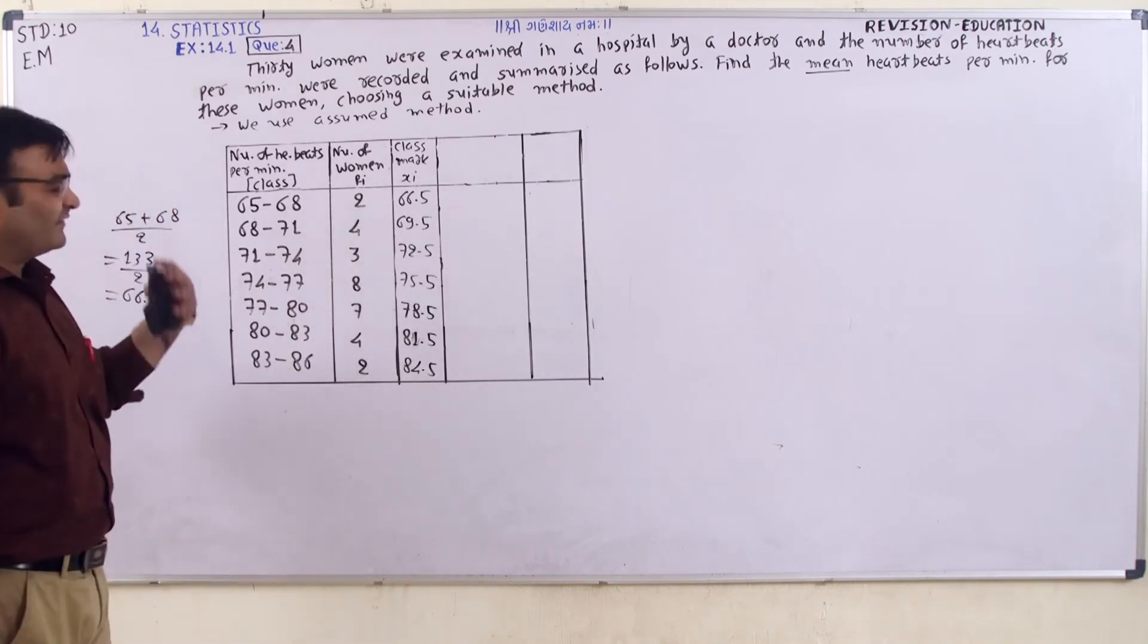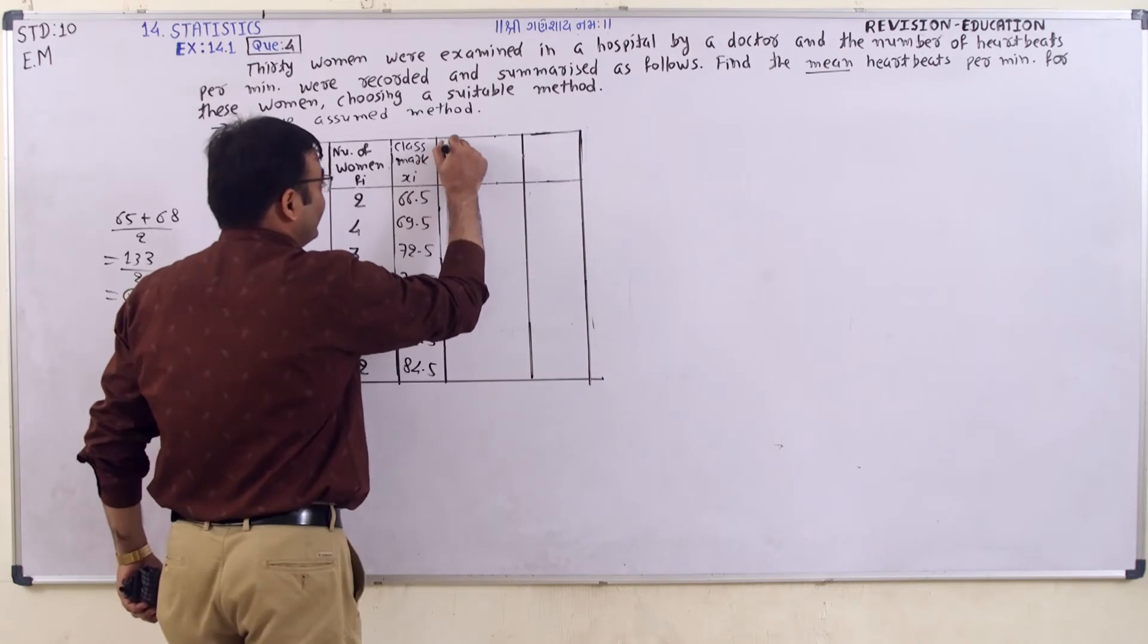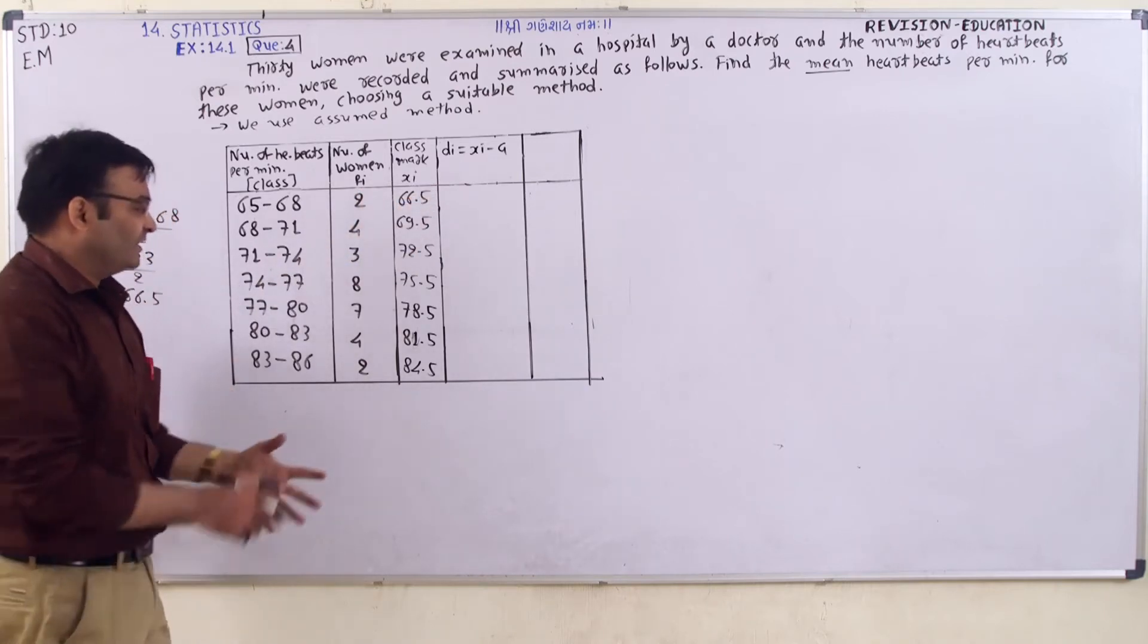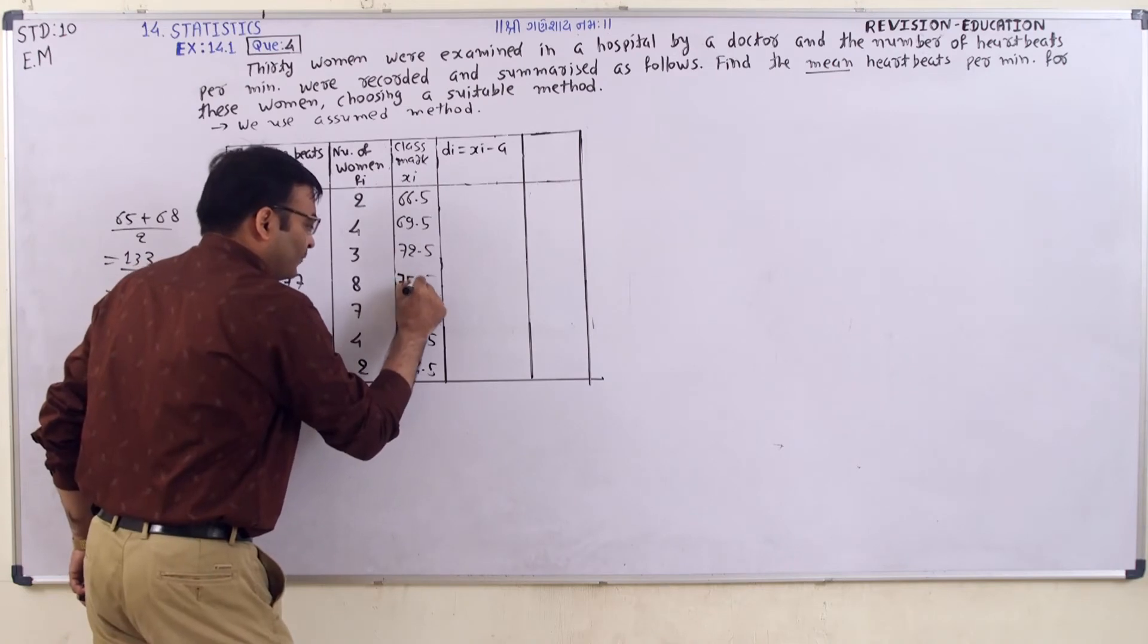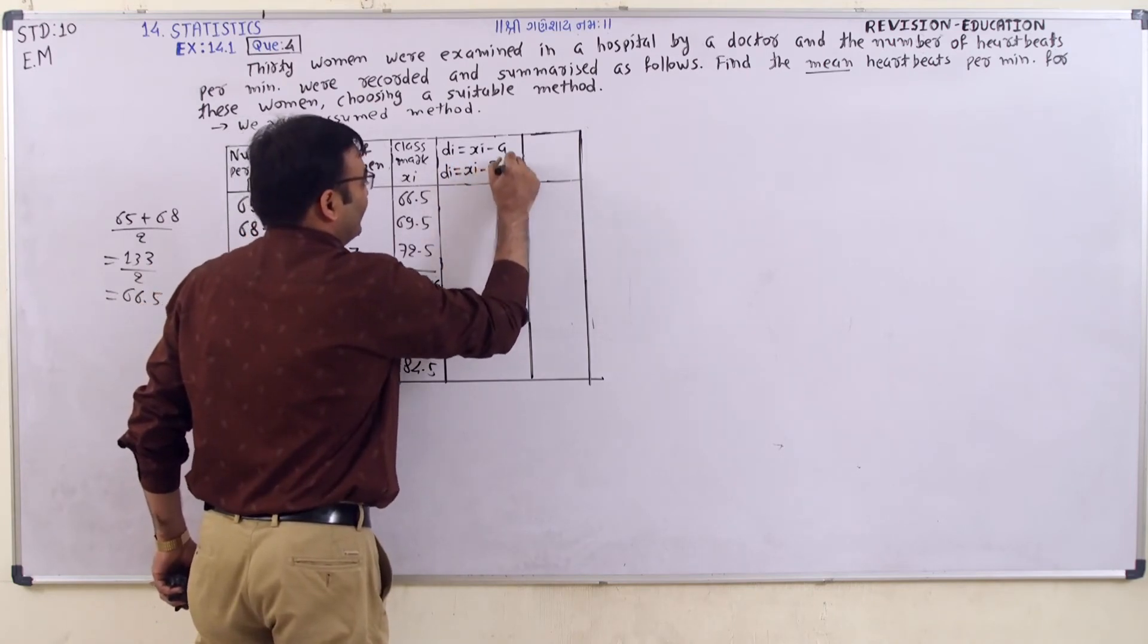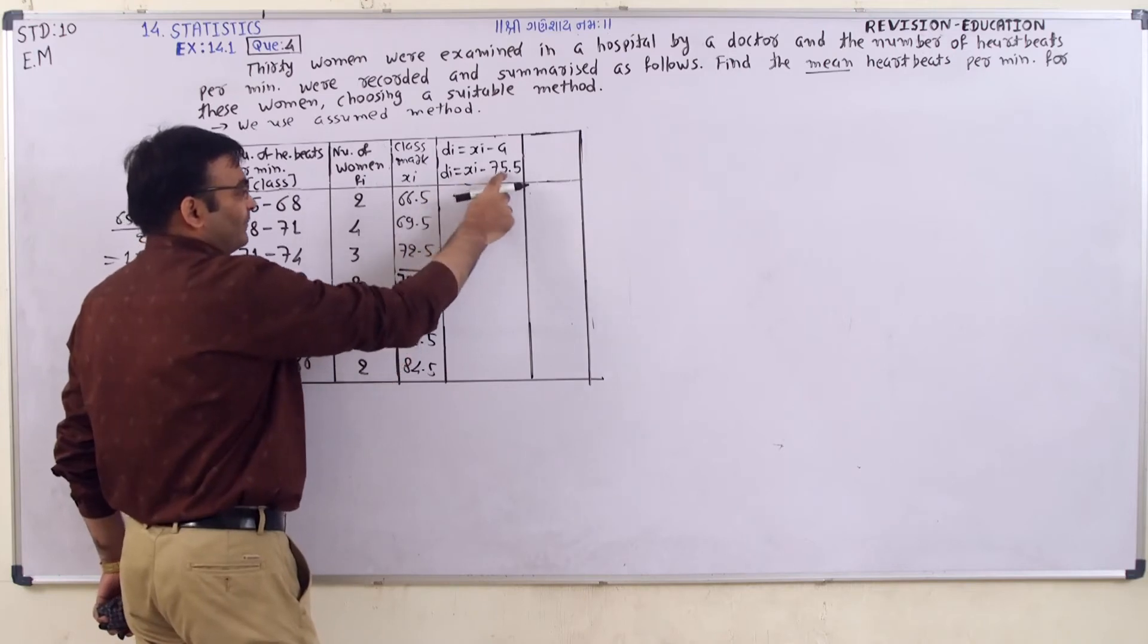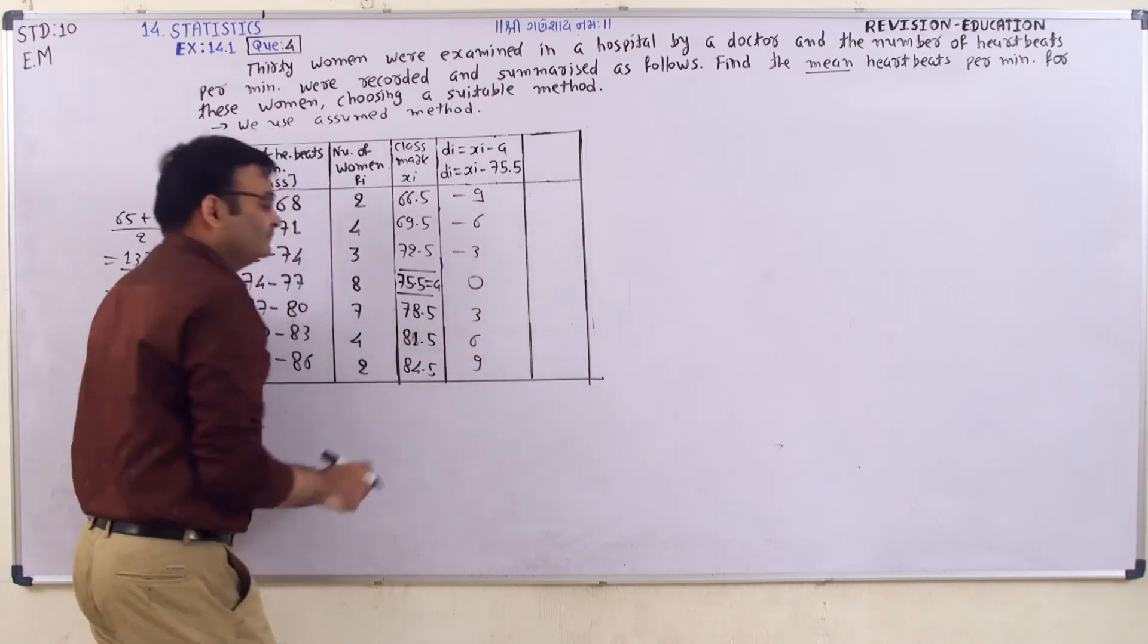One point is, we can use assumed mean method or step deviation method. We use assumed mean method. DI is equal xi minus A. You can use any A. We use one two three four, which value is 75.5. We assume A is equal 75.5. DI is equal XI minus 75.5. So 66.5 minus 75.5.